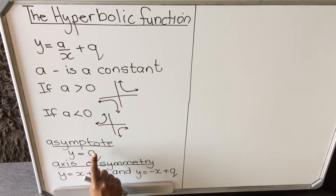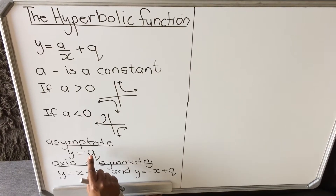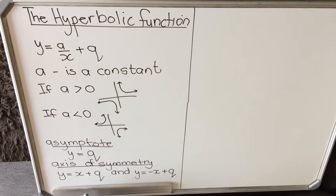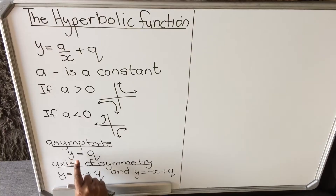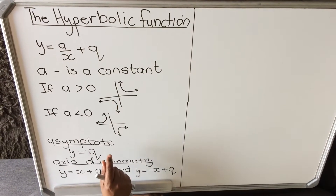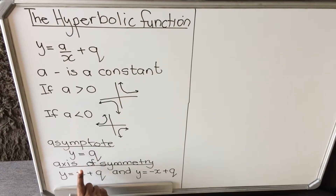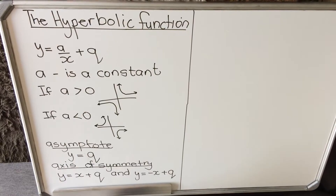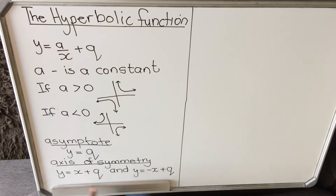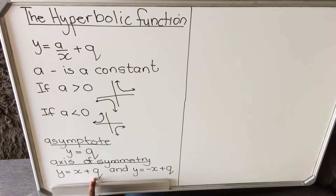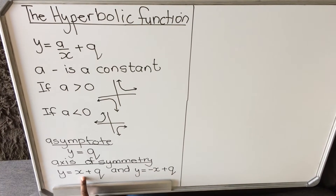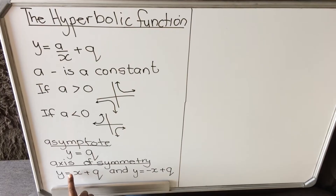The value q will be your asymptote. An asymptote is a straight line that the graph will go towards but will not touch. So the asymptote will be y equals whatever number you have in q. This function also has two axes of symmetry — a line where you fold the graph and it falls exactly on top of the other side. The first axis of symmetry is y equals x plus q, and the other is y equals negative x plus q.